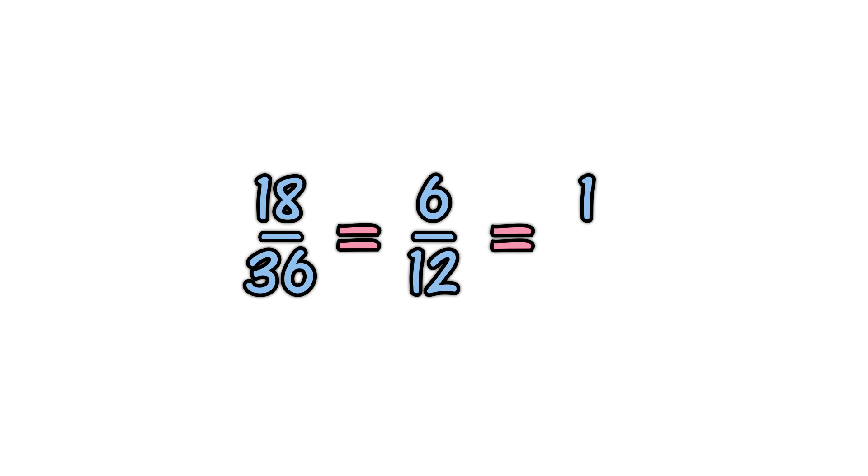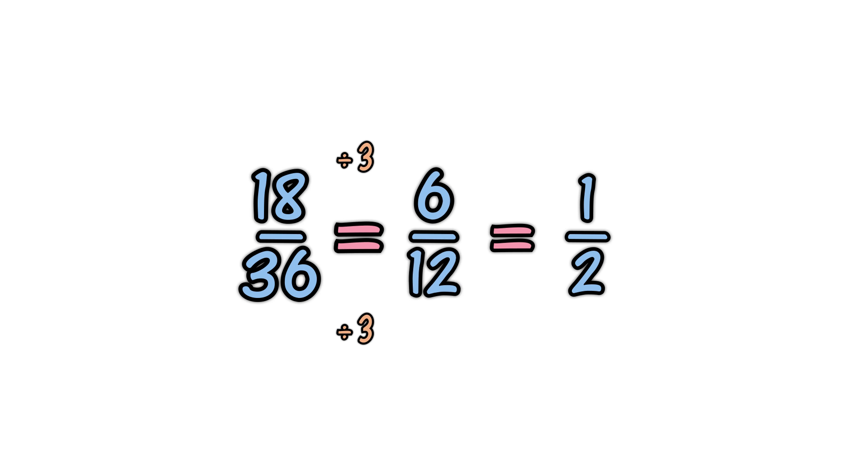Dividing. Here are some more equivalent fractions, this time by dividing. When we divide the eighteen by three, we get a six. When we divide the thirty-six by the same number, we get twelve. So eighteen over thirty-six is equivalent to six over twelve.